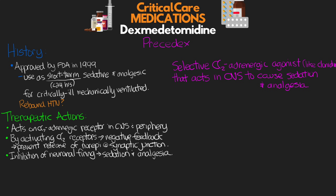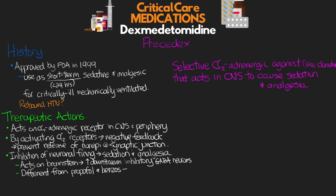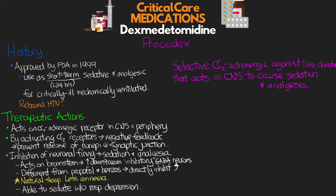This is accomplished by ultimately acting on the brainstem, increasing downstream activity of the inhibitory GABA neurons. This is different from other sedatives like propofol and benzos that directly inhibit GABA neurons. This results in sedation that more closely resembles natural sleep, leading to less amnesia. And unlike other sedatives and opioids, dexmedetomidine is able to sedate without respiratory depression — one of the big advantages of this medication. That said, it's certainly not as powerful as some of those other sedatives.